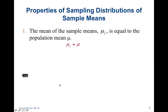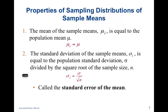The mean of sample means stays the same — it is equal to the population mean. Yet the standard deviation changes a little bit: it is equal to the population standard deviation divided by the square root of n. This can also be called the standard error of the mean.